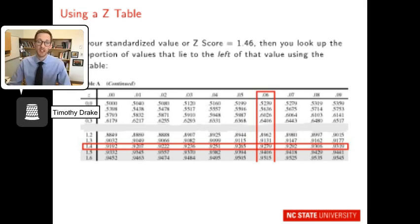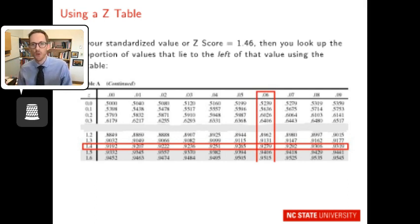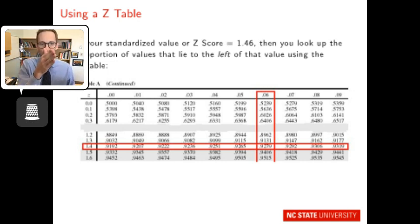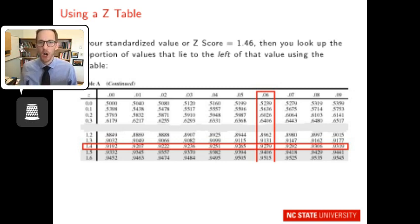Here's a concrete example using the z-table. If your standardized value is 1.46, you find 1.4 in the first column, then go across to the 0.06 column. The proportion of values lying to the left of a z-score of 1.46 is 0.9279. The table is highlighted there to show how to read these z-tables.